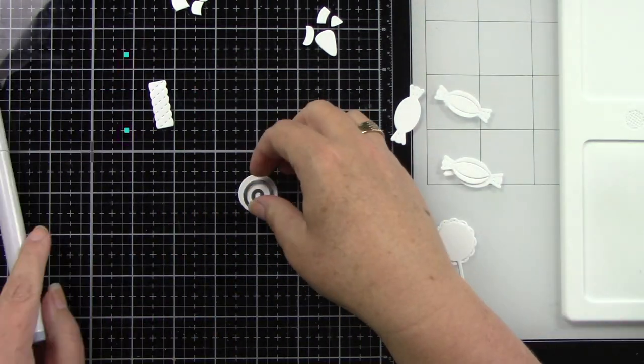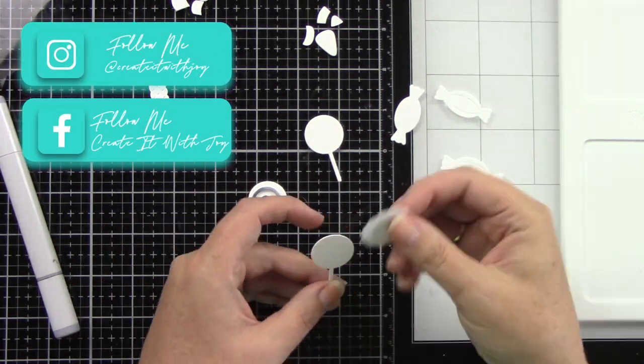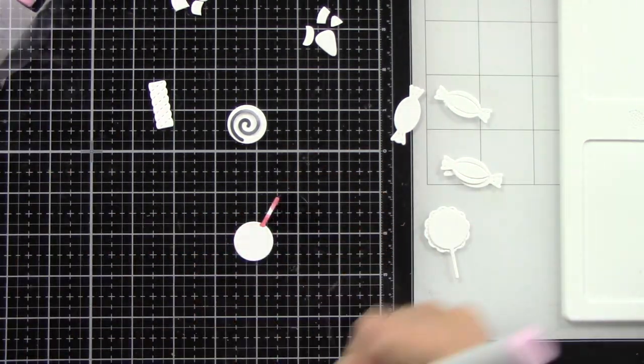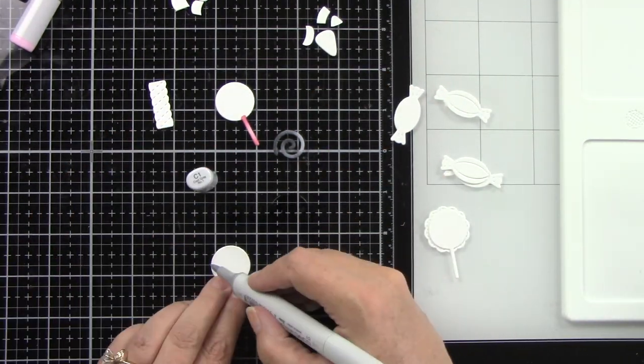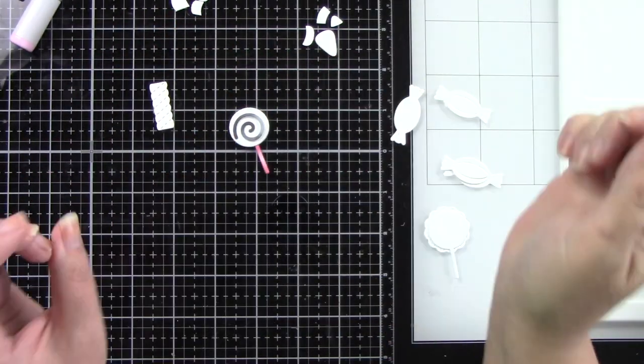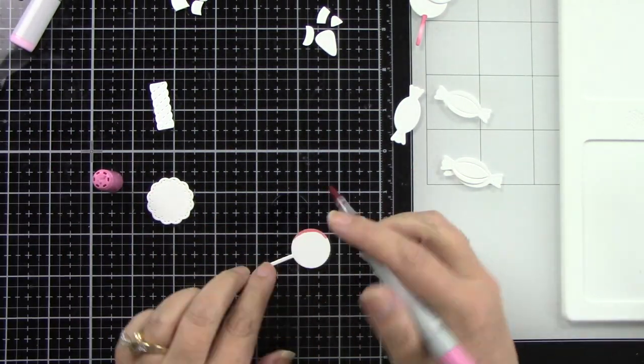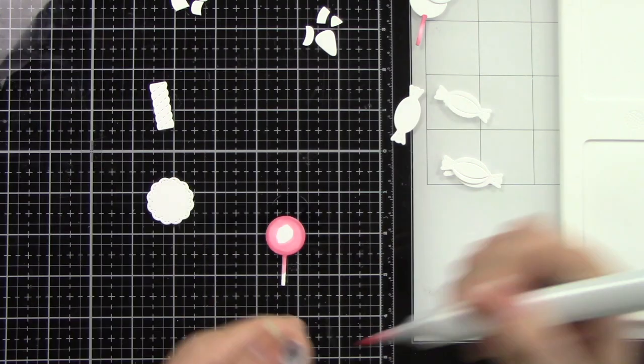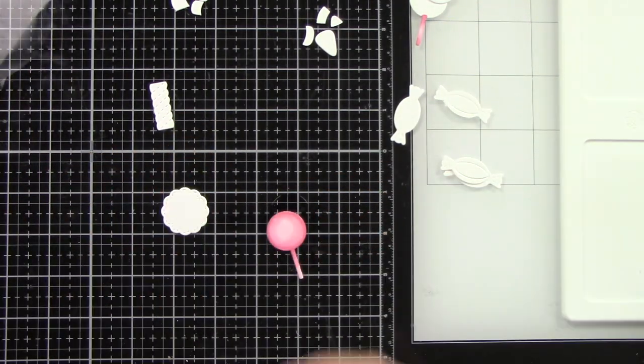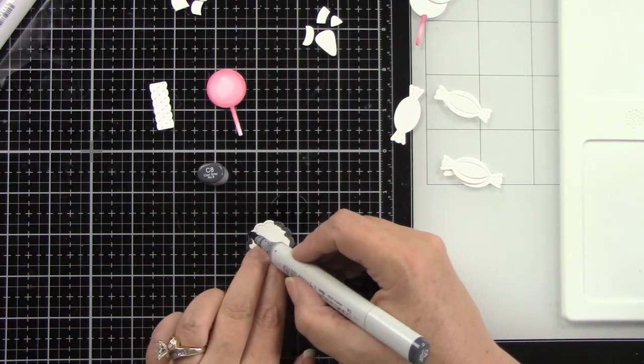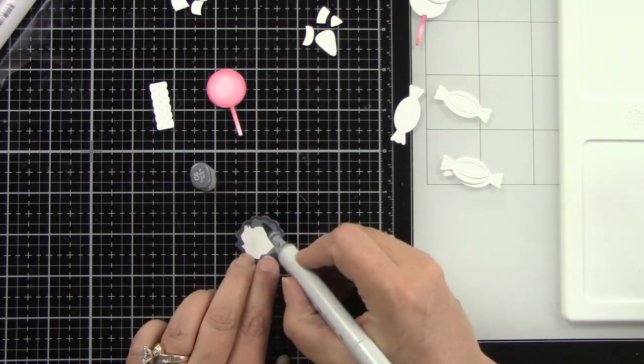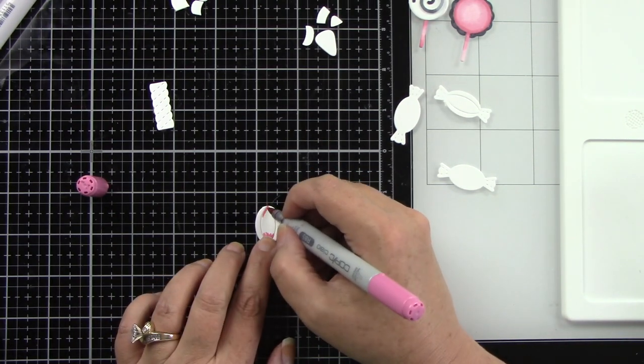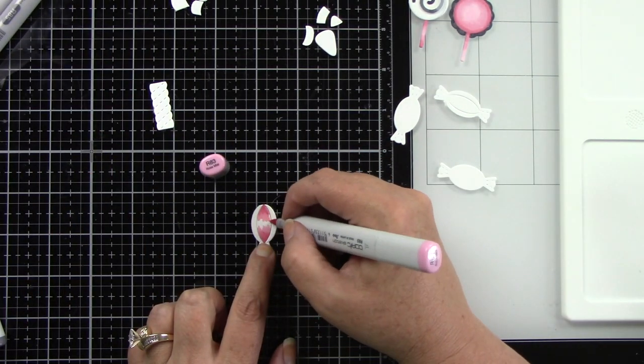I picked out the candies that I want to use and I'm just going to start coloring. I like to use the C colors like C4, 6, and 8 if I want a black color. Then I've got my pink, I believe it's R81, 83, and 85. For the white I just use C1 or C2 and a blender pen to soften it. I don't want to leave my cardstock white, I want to add a little bit of shadow with a really light gray marker.